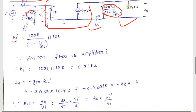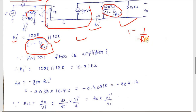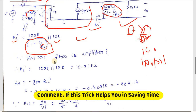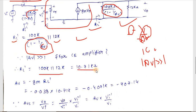RL' = [100k/(1 − 1/Av)] ∥ 12k. Since the internal voltage gain of a CE amplifier is always much greater than 1 (|Av| >> 1), the term 1/Av is negligible, so the denominator reduces to 1. Therefore RL' ≈ 100k ∥ 12k = 10.71 kΩ.